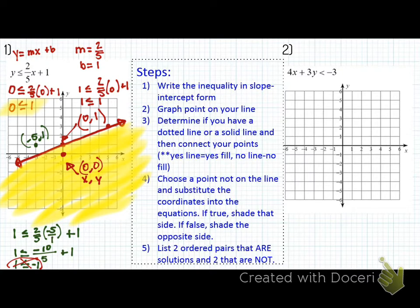Number two. Ready? Number two is not in our slope-intercept form. So I want to convert that into slope-intercept form. So what I'm going to do first is I'm going to subtract 4x on both sides. And I'll actually put it right here this time. So we got 3y is less than negative 4x minus three. And then we're going to divide both sides by three. So you got y is less than negative 4/3x minus one. Because negative three divided by three is negative one. Now we have the slope and y-intercept.